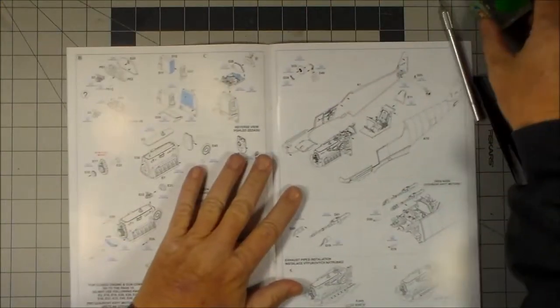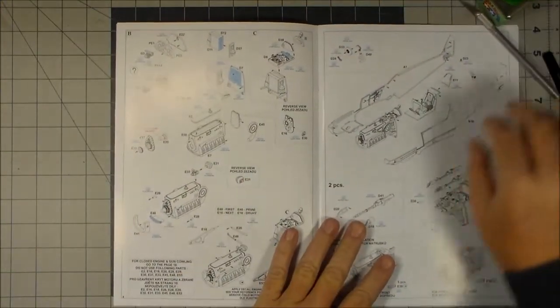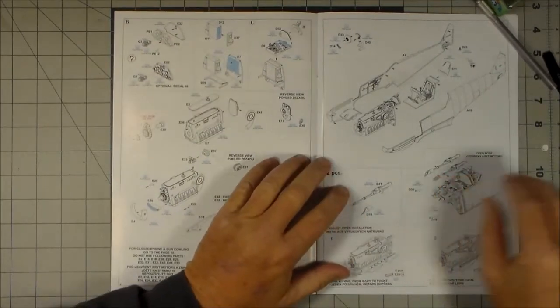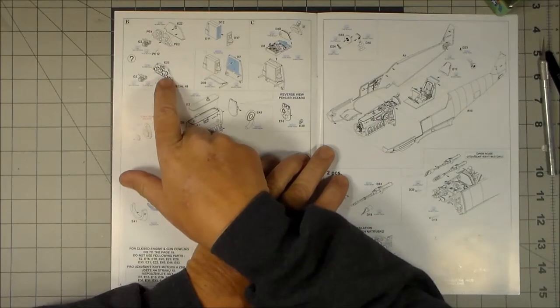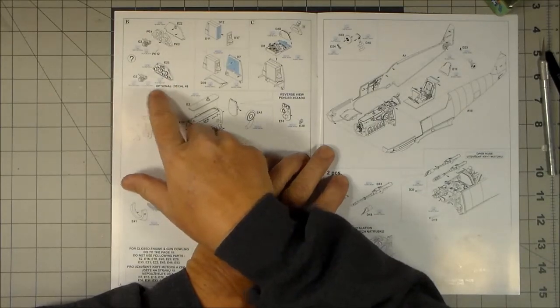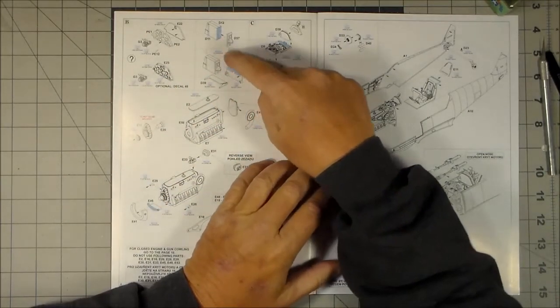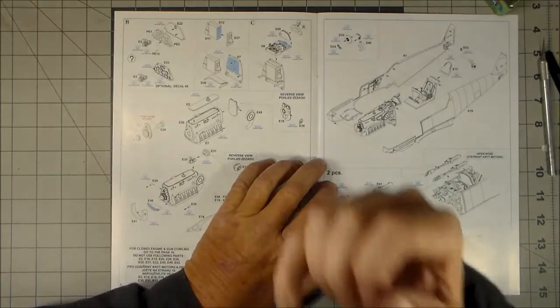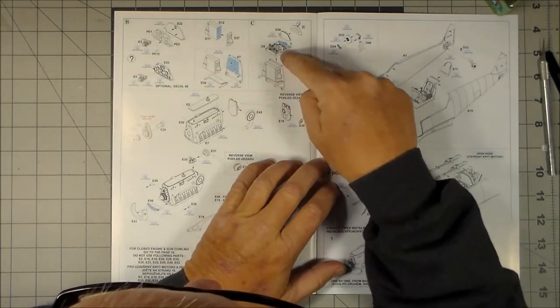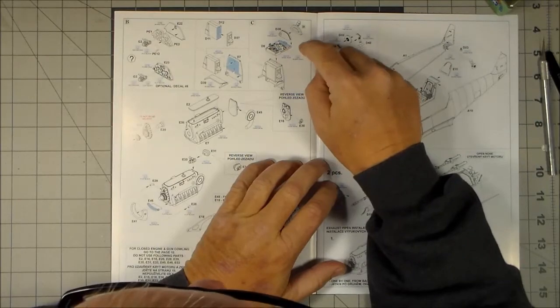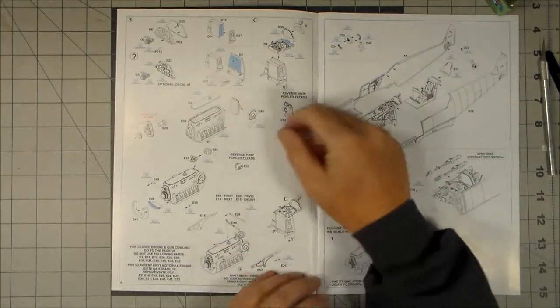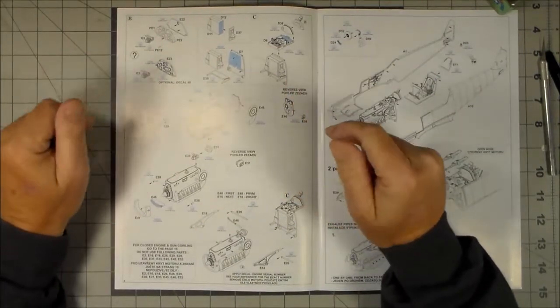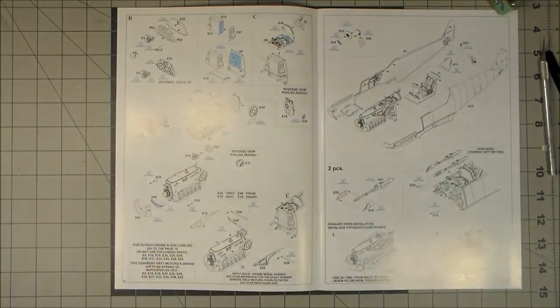Now we can flip over to page four. Page four is the instrument panel with the gun sight, the firewall, and the gun bay or the gun platform and then the engine. So I'll start cutting some of this stuff off and start putting it together.